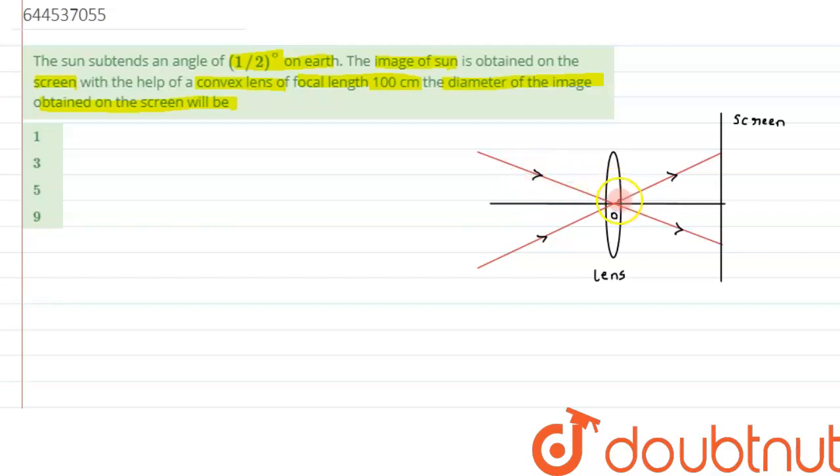As given in the question, the sun is subtending an angle of theta, given as half a degree. When the light ray passes through the optical center, it passes undeviated. If this angle is theta, the vertically opposite angle will also be theta.